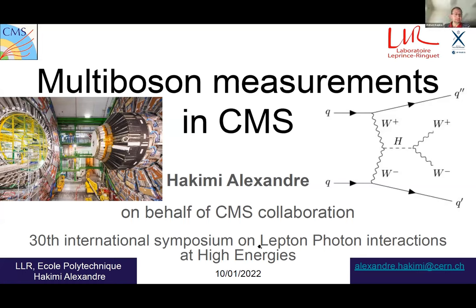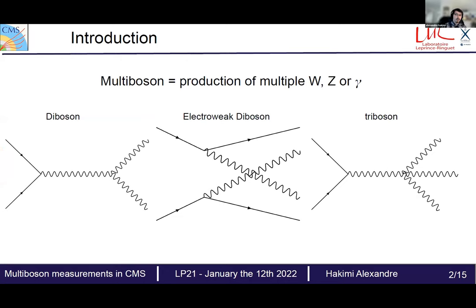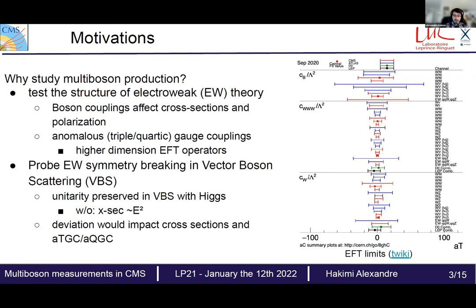We move on to Alexander, who will give a report on multi-boson measurements at CMS. Hello everyone, I'm Alexander, here on behalf of the CMS collaboration. Multi-boson production is the production of multiple W, Z bosons, or photons. We have different topologies including diboson, triboson, and electroweak diboson — the special case we call vector boson scattering.